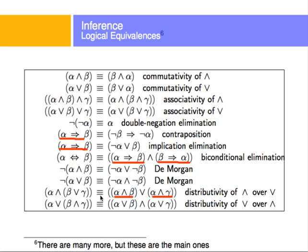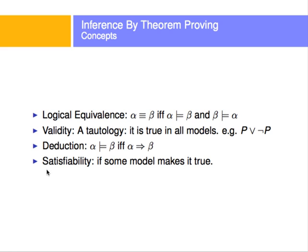These are rules that are going to help us resolve and evaluate expressions and sentences. Also, a few other theoretical concepts: alpha is equivalent to beta if and only if alpha entails beta and beta entails alpha, meaning both alpha and beta are equivalent.